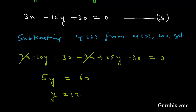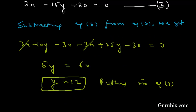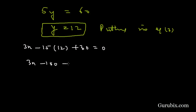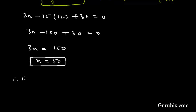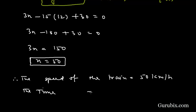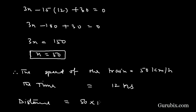This means y equals 12. Putting y equals 12 into Equation 3 to get x: 3x minus 15 times 12 plus 30 equals 0, which gives 3x minus 180 plus 30 equals 0, so 3x equals 150, meaning x equals 50. Therefore, the speed of the train is 50 km per hour and the time is 12 hours. The distance equals 50 multiplied by 12, which is 600 kilometers.